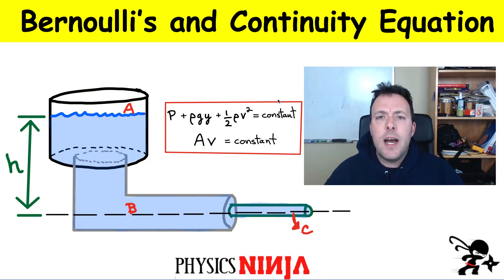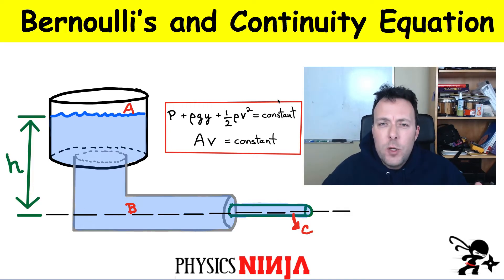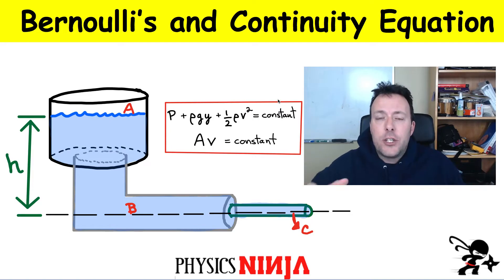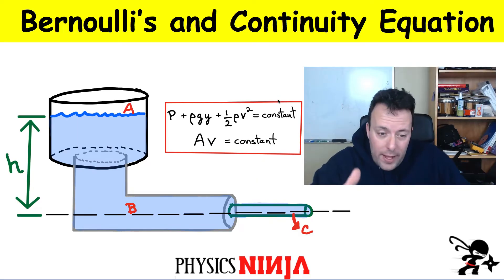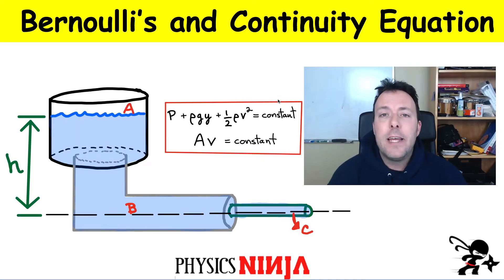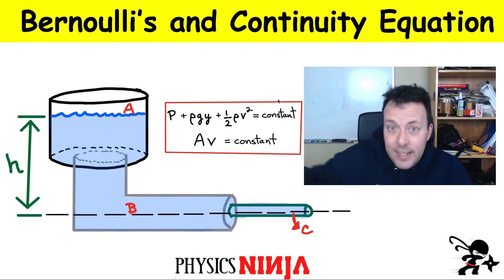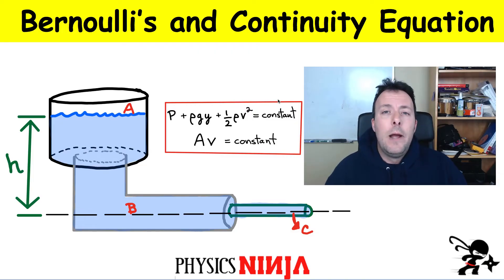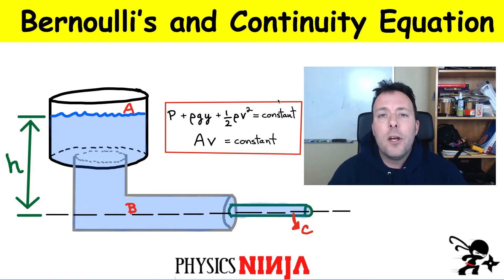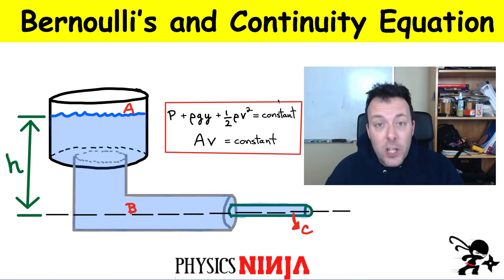Hi everybody, Physics Ninja here. Today we've got a nice problem where we're going to use Bernoulli's and the continuity equation to look at fluids in different cross-sectional pipes. We've got a system with three different pipes: a large reservoir connected to a larger pipe labeled B, which then connects to a smaller pipe that might lead to your house. The question is how we find the pressure everywhere and the speed of the water flowing in these different sections.